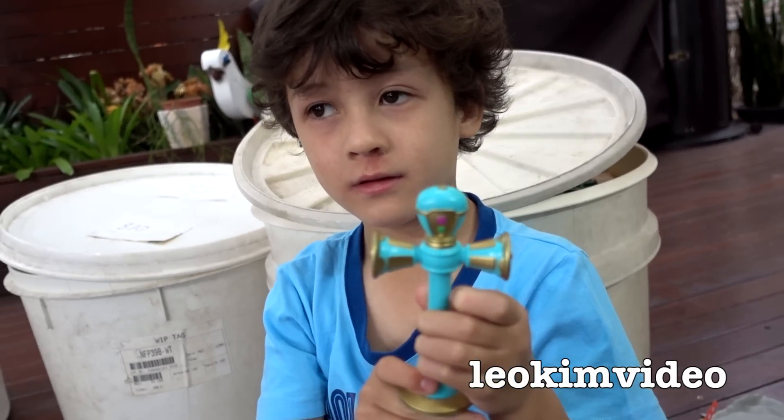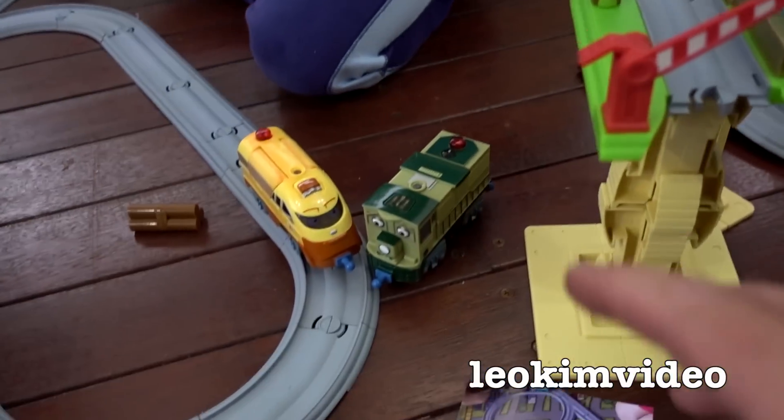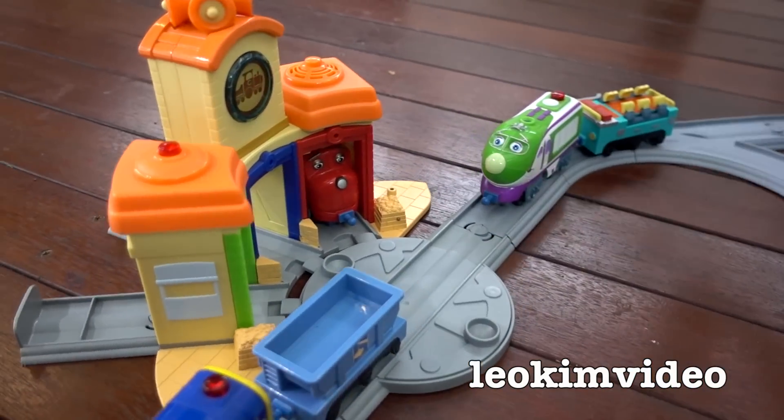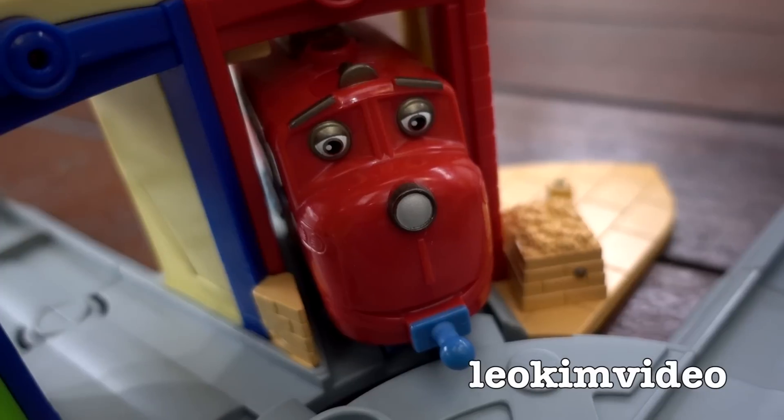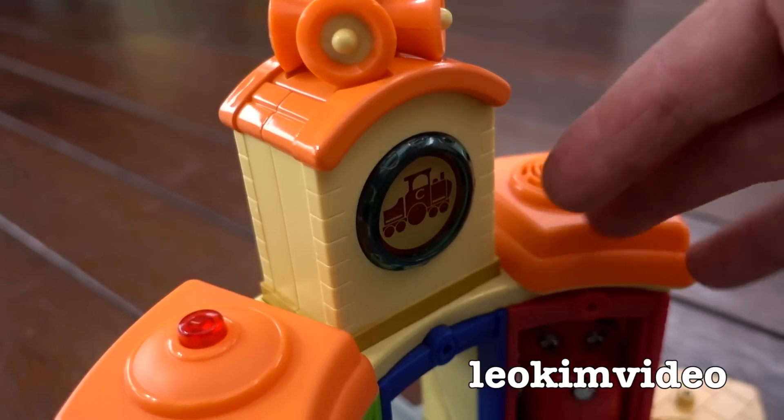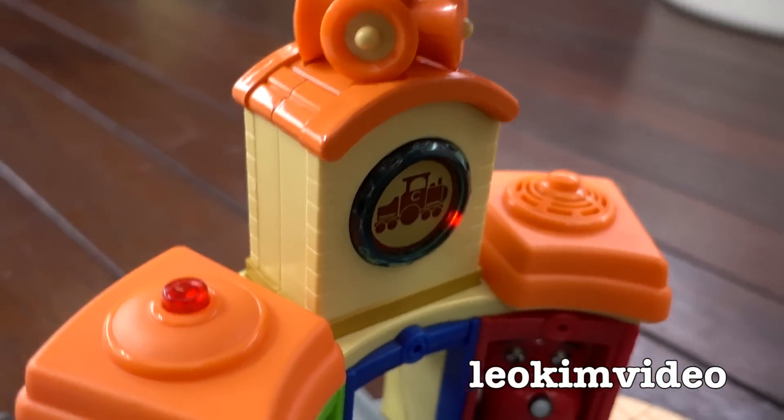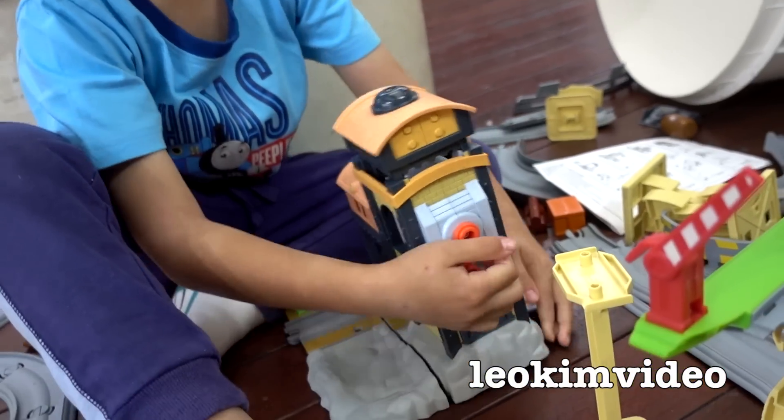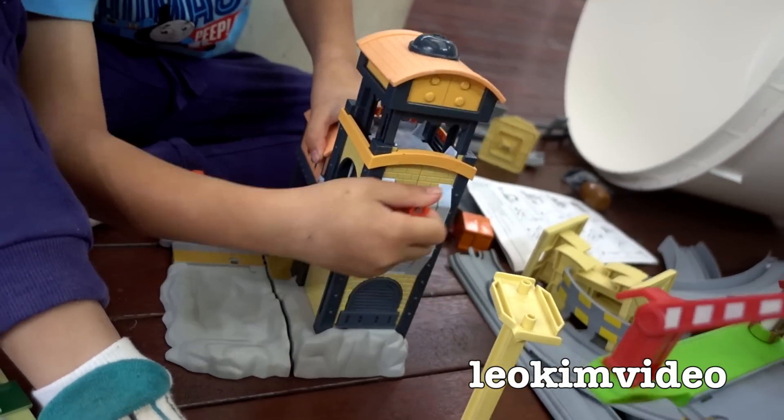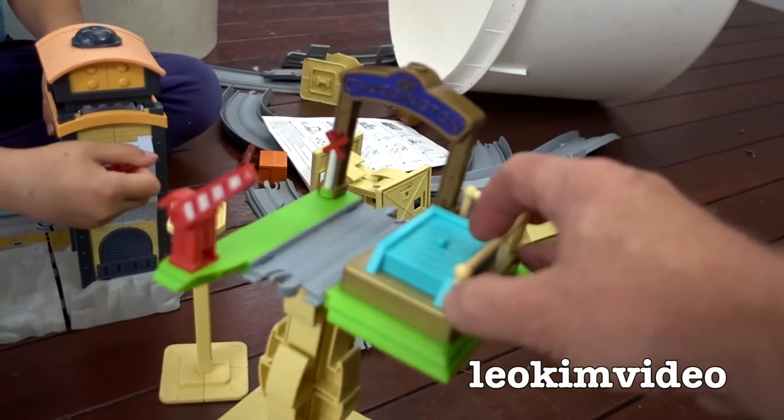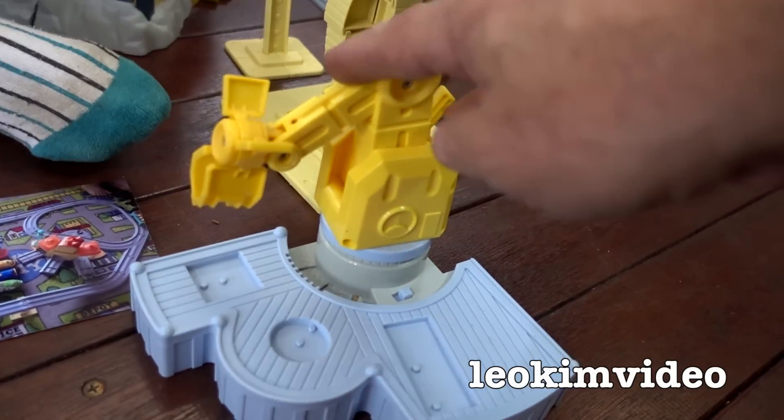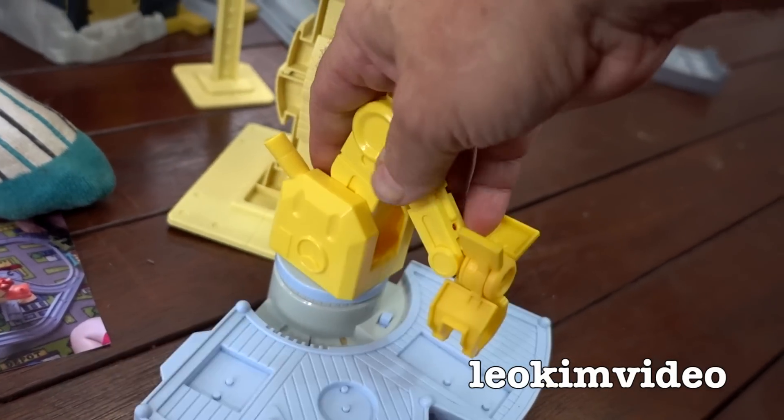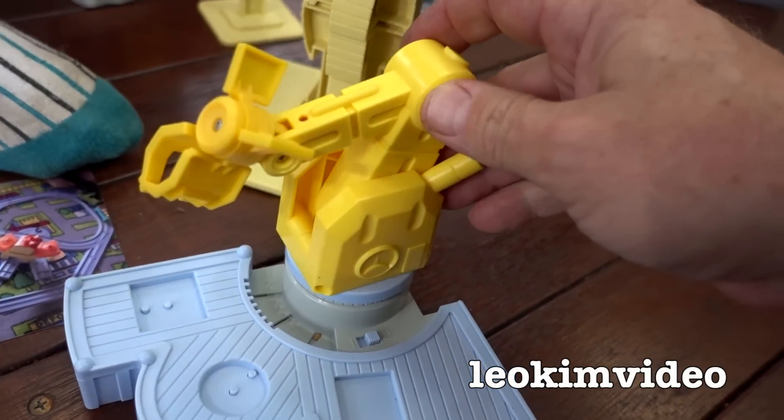There was something about Chuggington that never connected with my son. He could remember every Thomas & Friends name. But he struggled to remember these guys. And I think that might be an insight into why there was a downfall. On your tracks? And my son is certainly of the Chuggington era. Watch for your tunnel color. He grew up with this show.